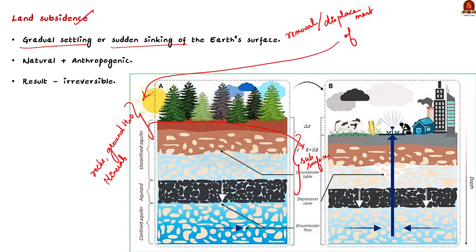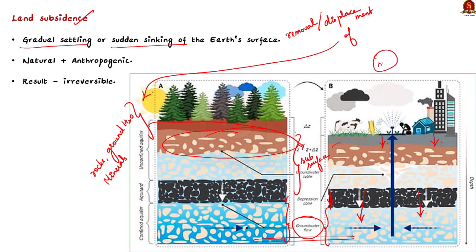To understand land subsidence with an example: rocks are closely packed below the surface of the earth, and we have a groundwater table below or above the rocks. If groundwater below the rocks is overexploited, it causes the weak rocks to fall in, leading to gradual settling or sudden sinking of earth's surface. Land subsidence can occur over large areas rather than in a small spot like a sinkhole, which is why it is of serious concern. Land subsidence is caused by both natural and anthropogenic hazards and it is irreversible.